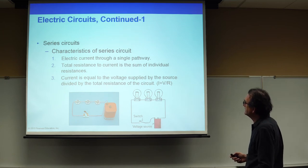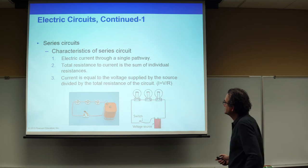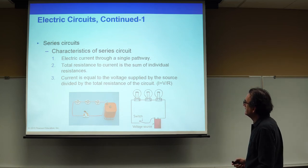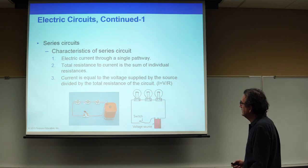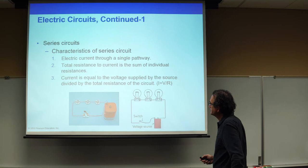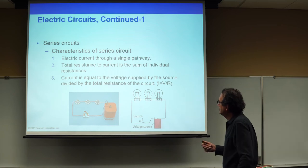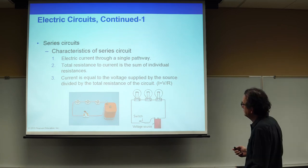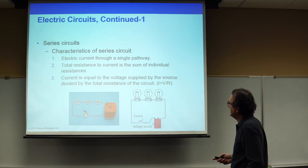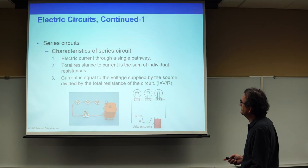The third point is that the current is equal to the voltage supplied by the source divided by the total resistance. The same current flows through every bulb, and the current can be calculated as the battery voltage in volts divided by the sum of the resistances in ohms. The units are: electrical potential in volts, resistance in ohms, and current in amperes — which is coulombs per second.